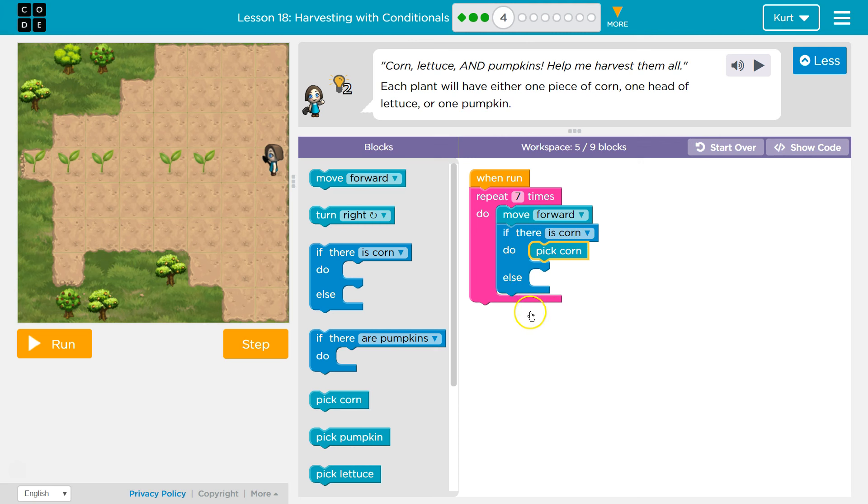If there is not corn, what do I want to do? Well, then I want to pick pumpkins, right? Oh, no, no, no. There's more. There's more than one. So now, if it's false, I need to check now, not just if it's a lettuce. Now, we're going to need to check if there are pumpkins.